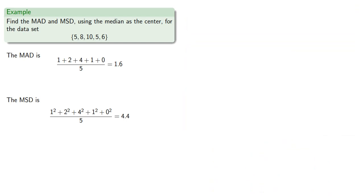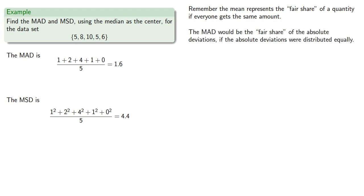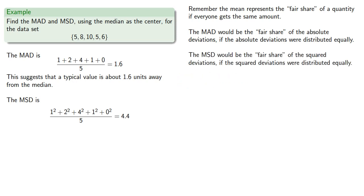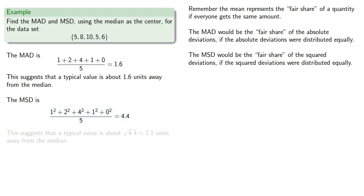It's worth taking a moment to consider what these values mean. The mean represents the fair share of a quantity if everyone gets the same amount. So the mean absolute deviation of 1.6 suggests that a typical value is about 1.6 units away from the median. Similarly, the mean squared deviation of 4.4 means a typical value has a squared deviation of 4.4, suggesting it is about √4.4 ≈ 2.1 units away from the median.